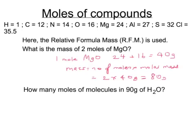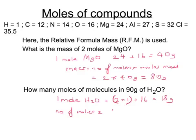That gives 80 grams. In the second question, how many moles of molecules are there in 90 grams of water? One mole of water has two lots of 1 for the hydrogen, plus one lot of 16, which is a total of 18 grams. We want to know the number of moles, so number of moles equals mass over molar mass: 90 grams over 18 grams is 5 moles.